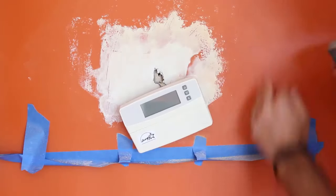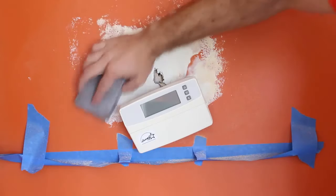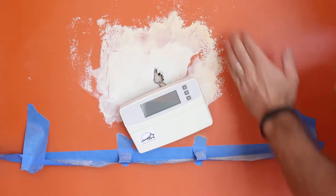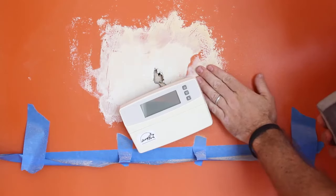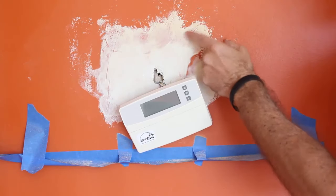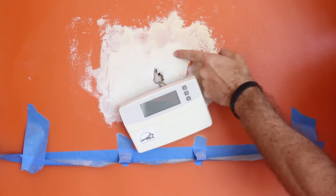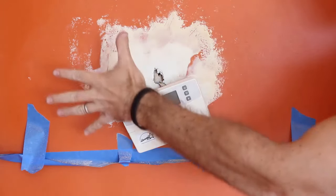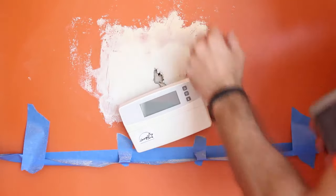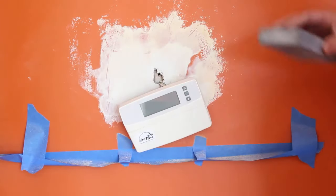So once you patch your wall, you can sand it down in a circular fashion using a sanding sponge. I highly recommend using Patch Plus Primer if you're going to just paint over this with the same paint that you have on the wall. That way you don't have to prime this. If you're just going to paint the whole wall, you can use Patch Plus Primer or Joint Compound. Either or will work.